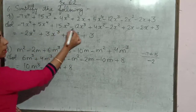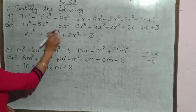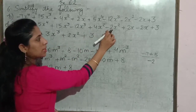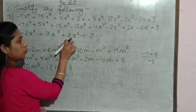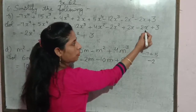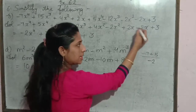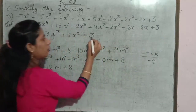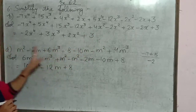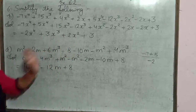Here, 15 and minus 12 — yahan se result hua plus 3, toh plus 3x cube. Here, plus 4 and minus 2, so what will be left? Plus 2x square. Yahan plus 2x minus 2x — yeh cancel ho jaenge, positive aur negative, dono same number hain. And plus 3 — 3 ke saath koi like term nahi hai, toh ise as it is type kar denge. Toh jo bhi hamara answer hai, usme koi bhi like terms nahi hai, so it is your answer.